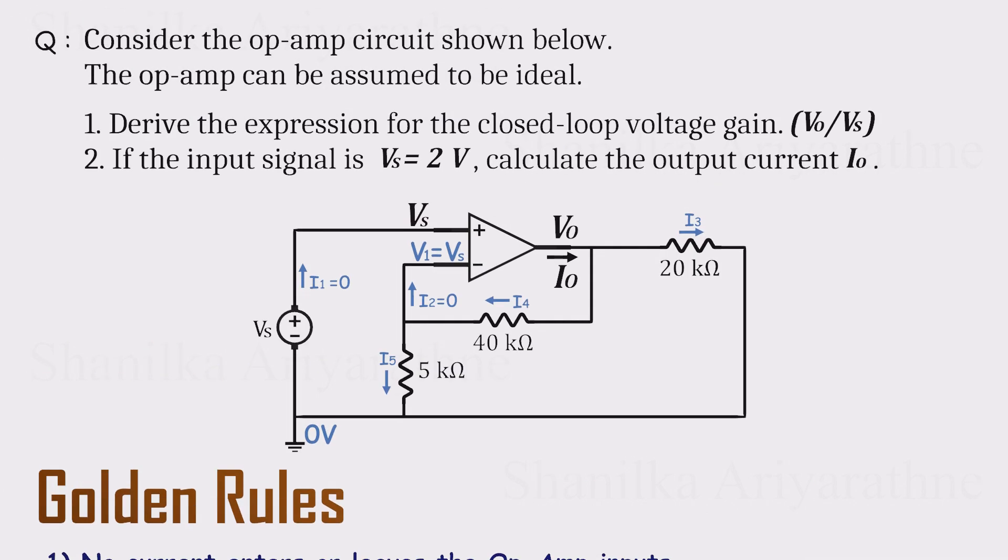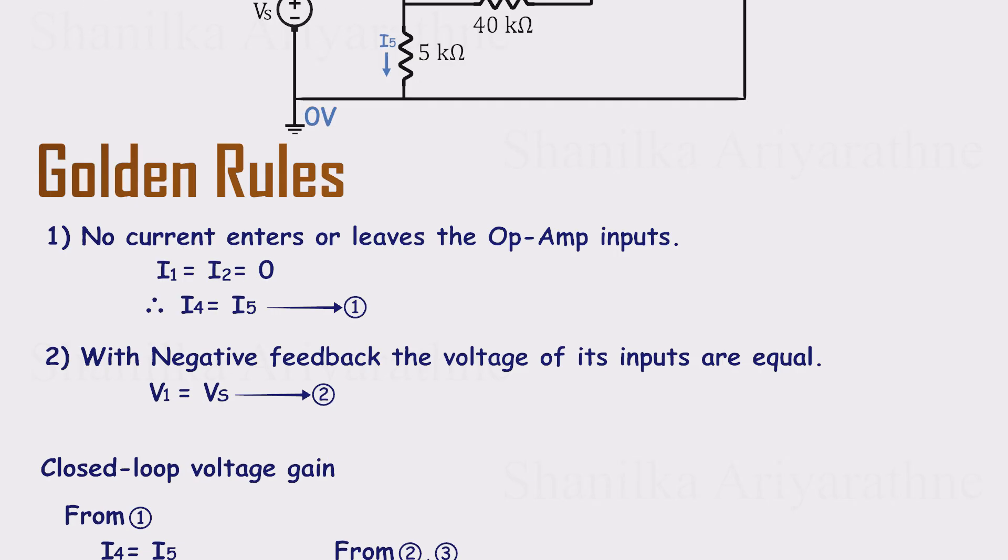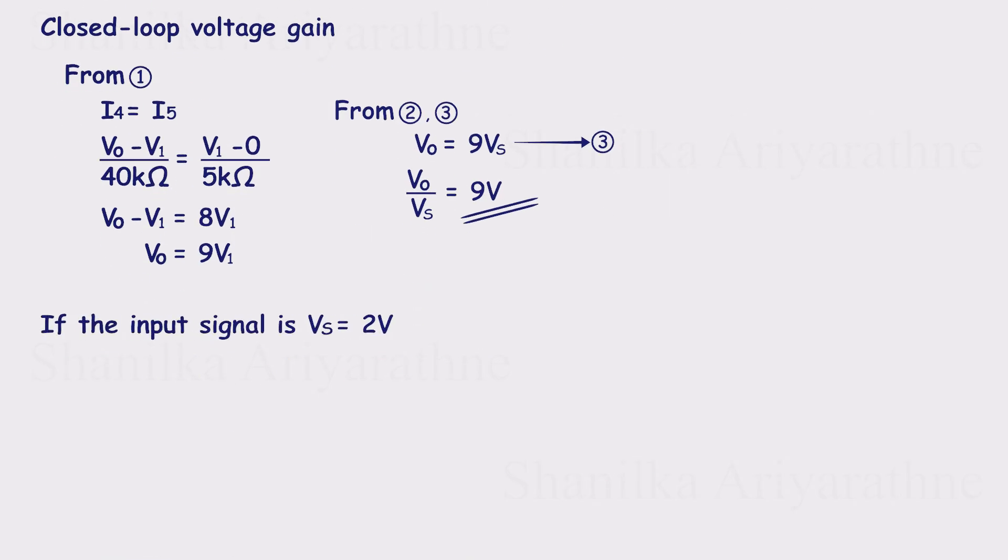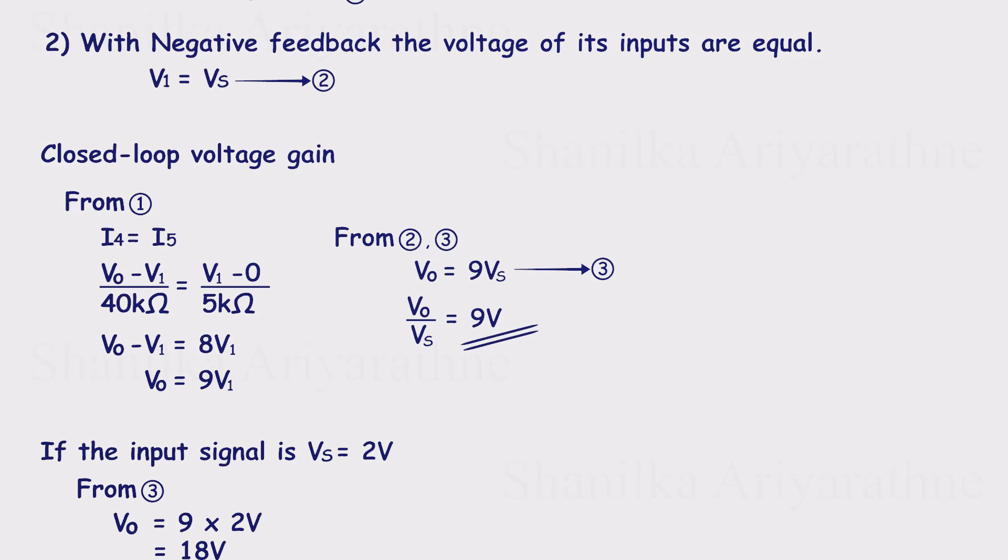Now for the second part of the problem. If VS is 2 volts, what is the output current? From our earlier relationship, VO equals 9 times VS. So with VS equals 2 volts, VO comes out to 18 volts.